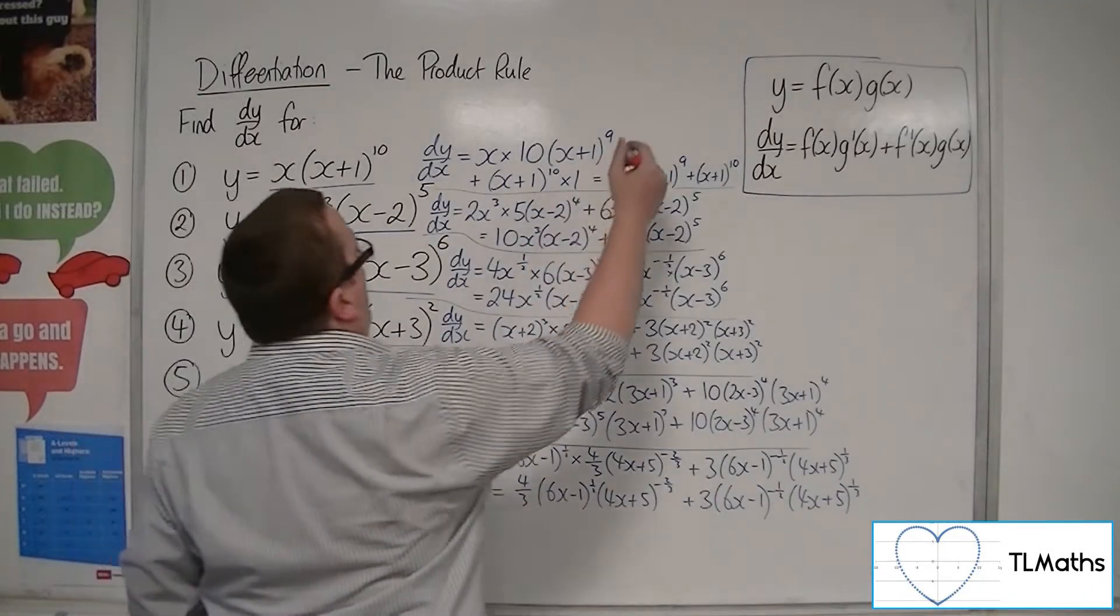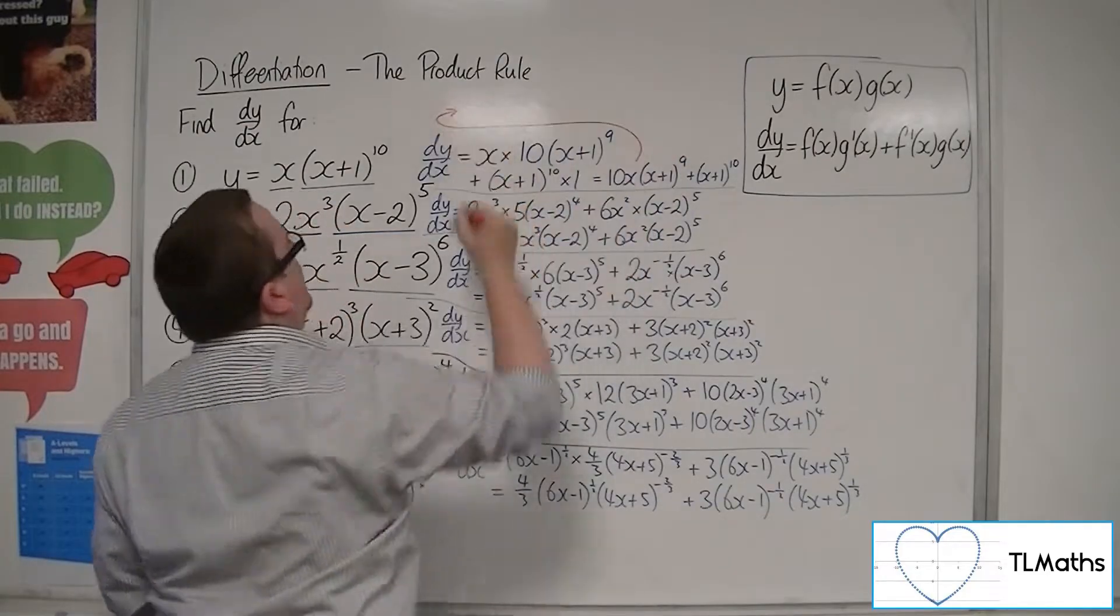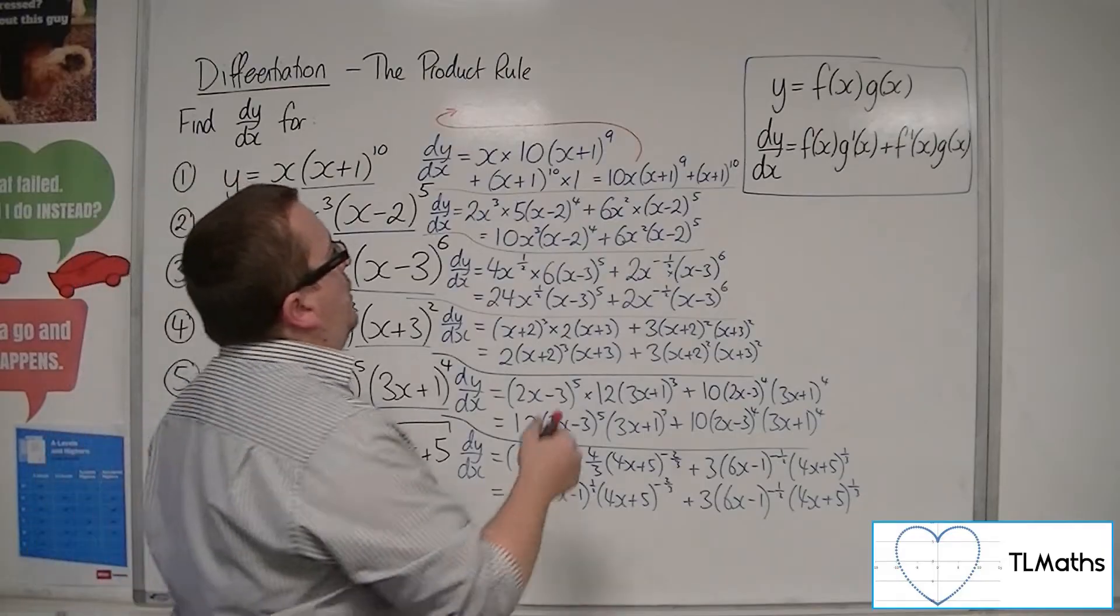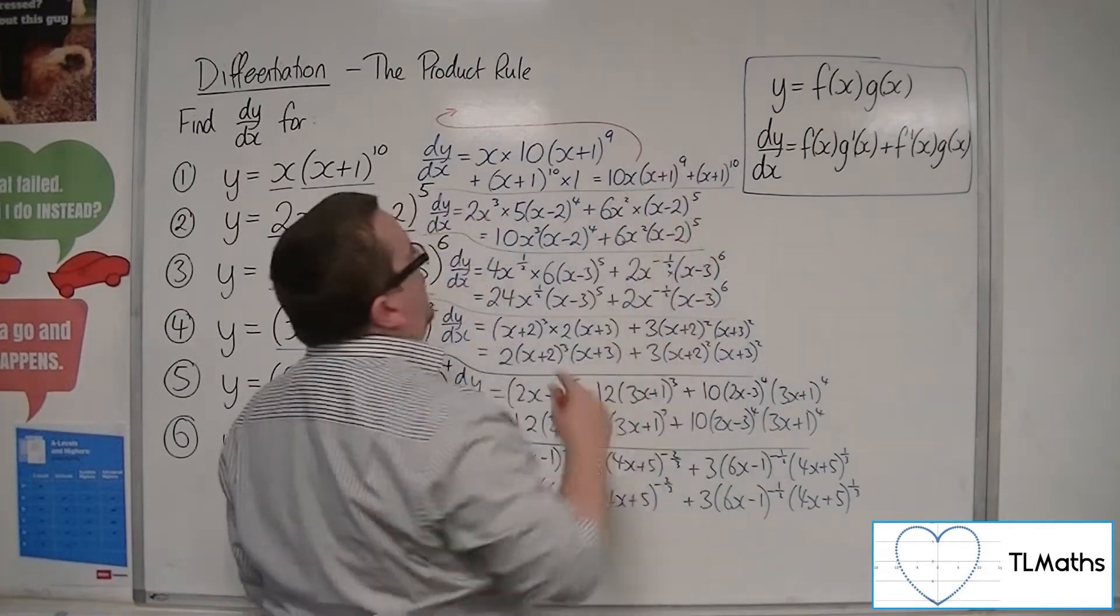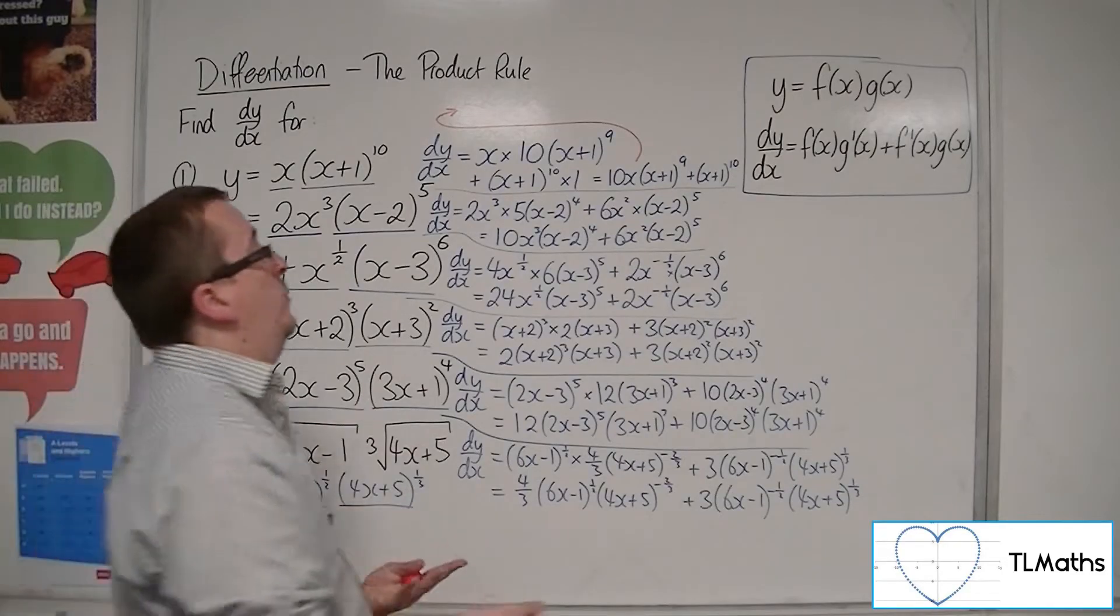For number one, I'm going to have to write it up here, I think. We've got 10x times (x+1)^9 plus (x+1)^10. The only thing I can factor out there is the (x+1)^9.